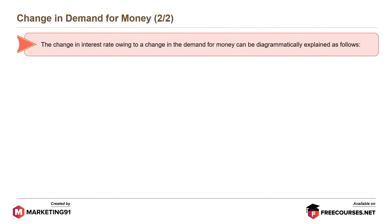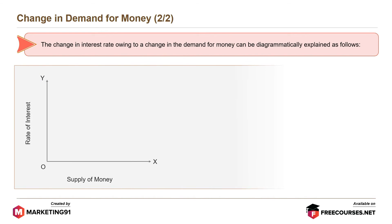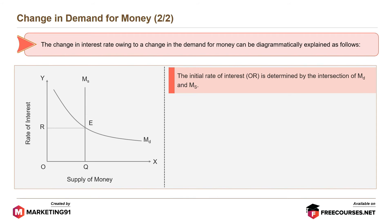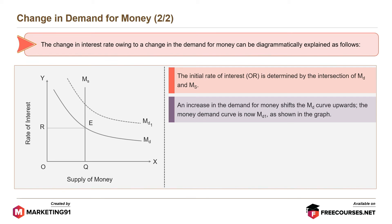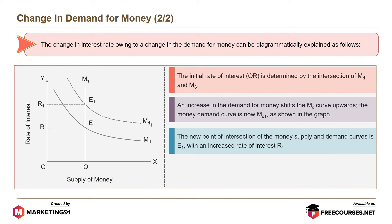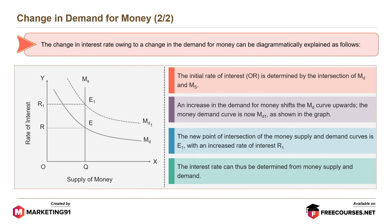The change in interest rate owing to a change in the demand for money can be diagrammatically explained as follows. Let the x and y axes determine the supply of money and rate of interest respectively. The initial rate of interest, OR, is determined by the intersection of MD and MS. An increase in the demand for money shifts the MD curve upwards; the money demand curve is now MD1. The new point of intersection of the money supply and demand curves is E1, with an increased rate of interest, R1. The interest rate can thus be determined from money supply and demand.